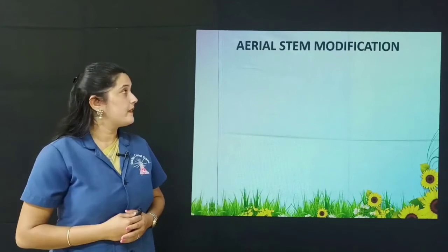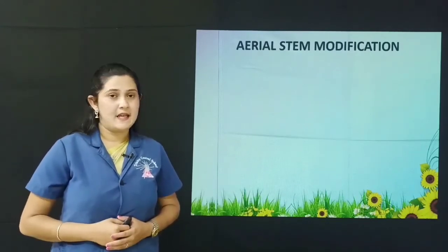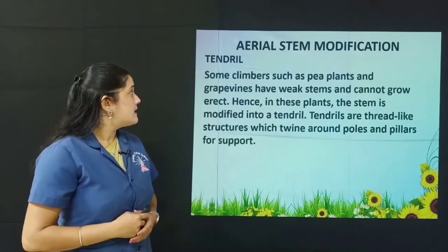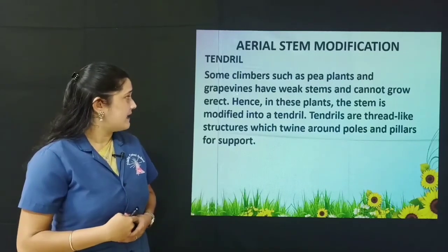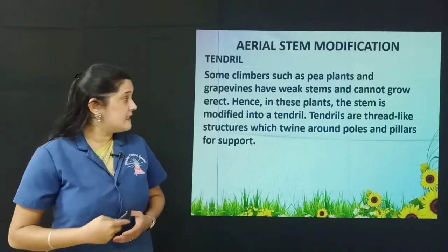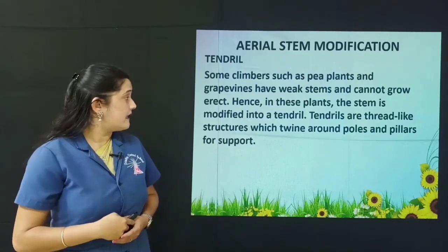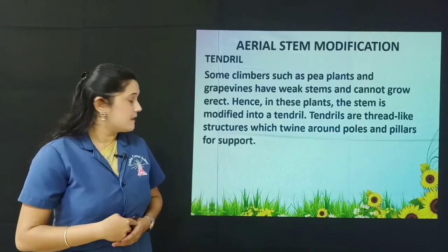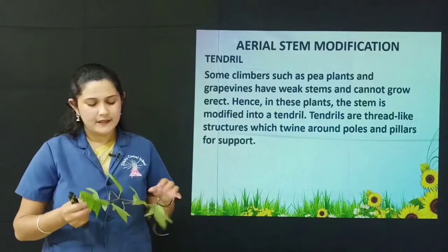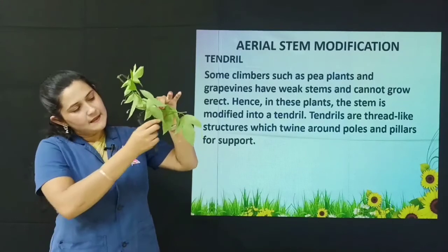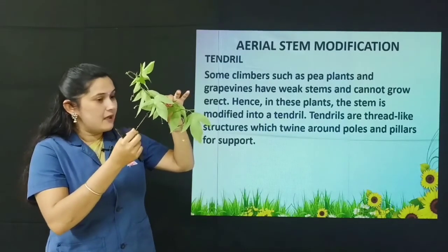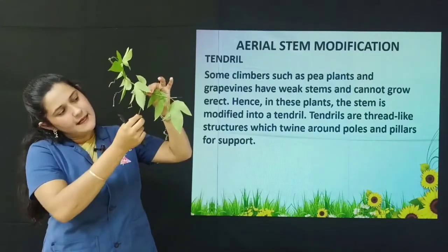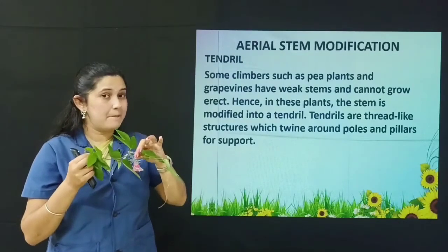Aerial stem modification has two types: tendril and thorn. Some climbers such as pea plants and grapevines have a weak stem and cannot grow erect. Hence, in these plants the stem is modified into a tendril. Tendrils are thread-like structures which twine around poles and pillars for support. Here you can see these thread-like structures helping the plant twine for support — this is an example of a tendril.